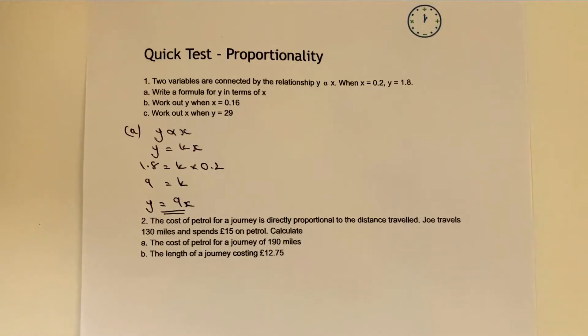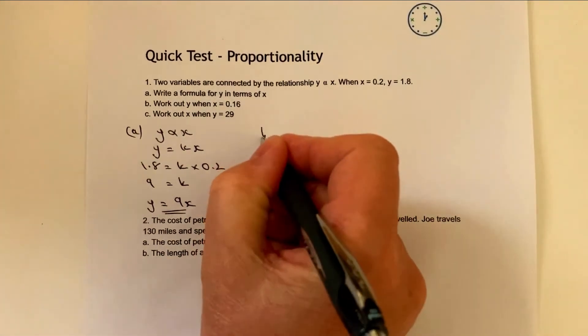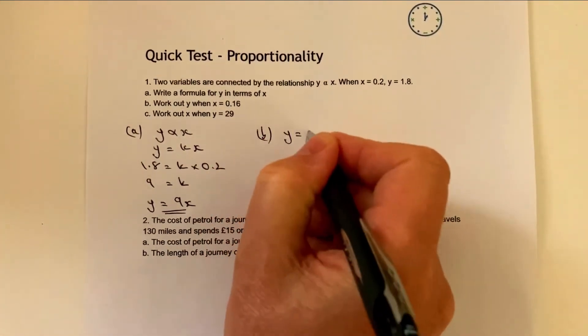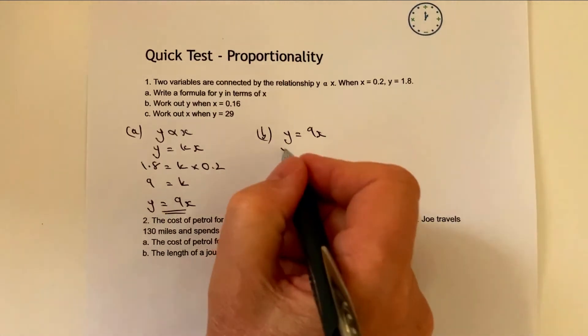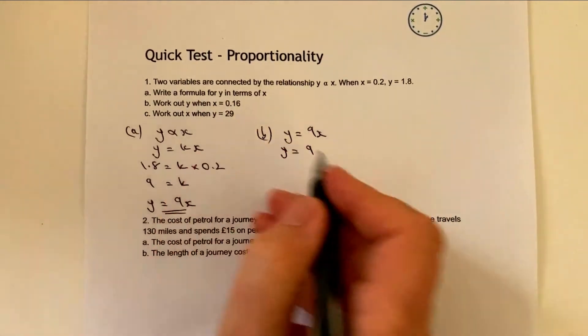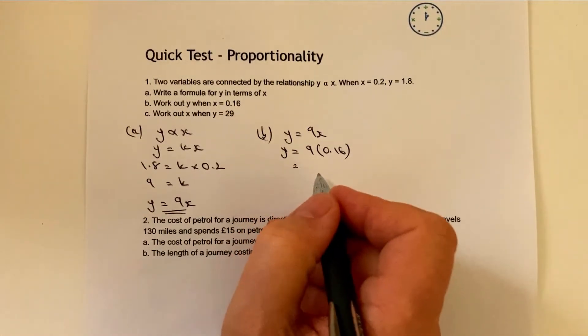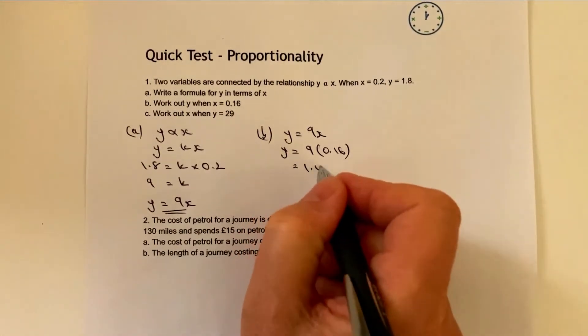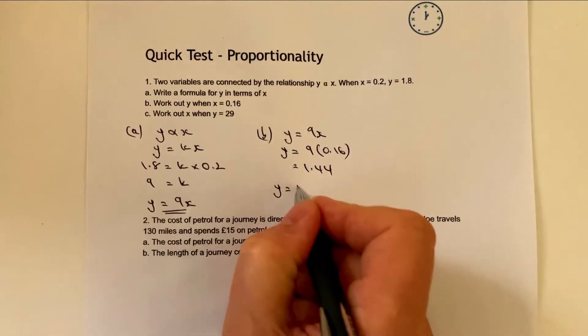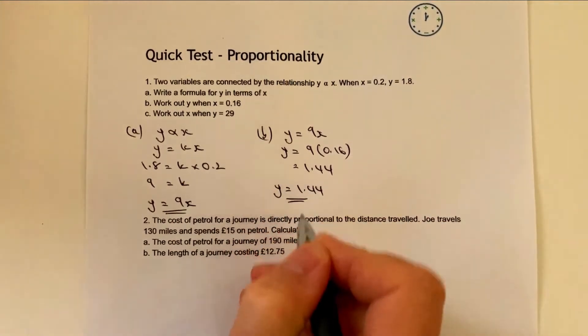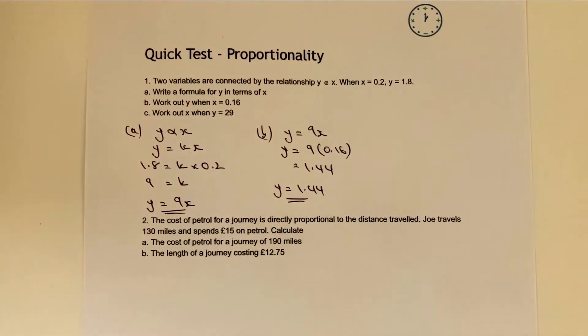Now we're going to use this formula to answer question b and question c. Question b says work out y when x equals 0.16. So all we do is say we know that y equals 9x. Well, y is going to equal 9 times 0.16. Pop that into a calculator or work it out, you're going to get 1.44. So therefore y equals 1.44.